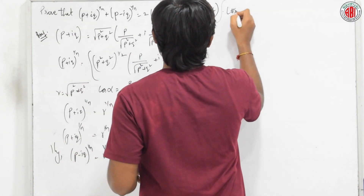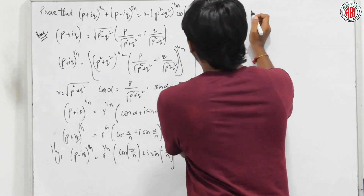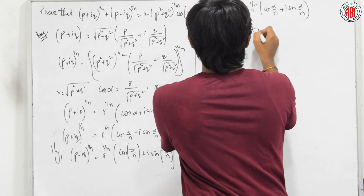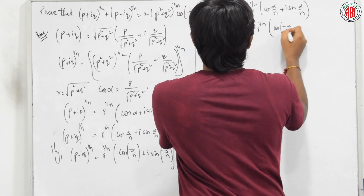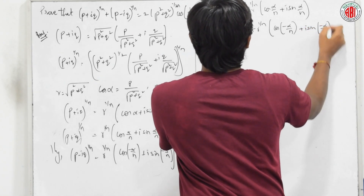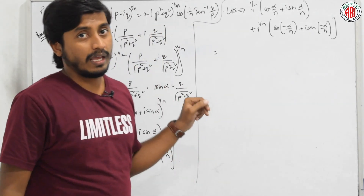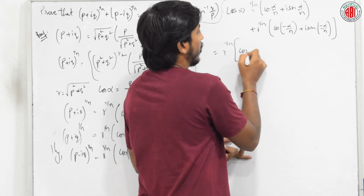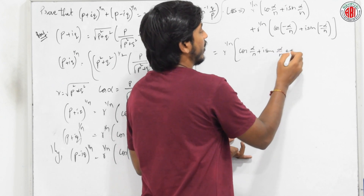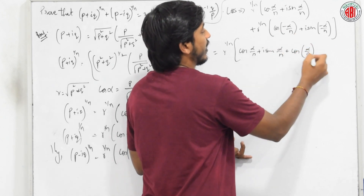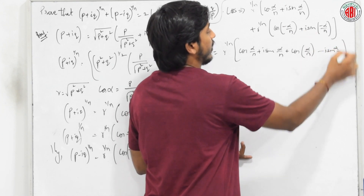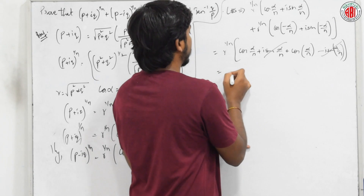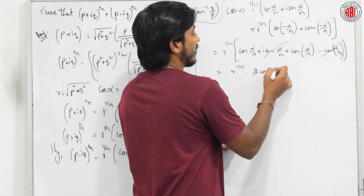Adding the two terms: r^(1/n)(cos(α/n) + i sin(α/n)) + r^(1/n)(cos(−α/n) + i sin(−α/n)). Since cos(−θ) = cos θ and sin(−θ) = −sin θ, the imaginary parts cancel. We are left with r^(1/n) · 2cos(α/n).